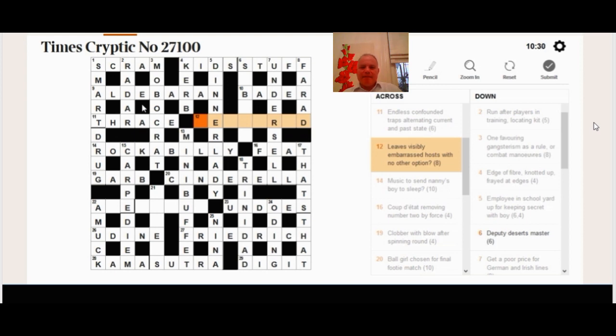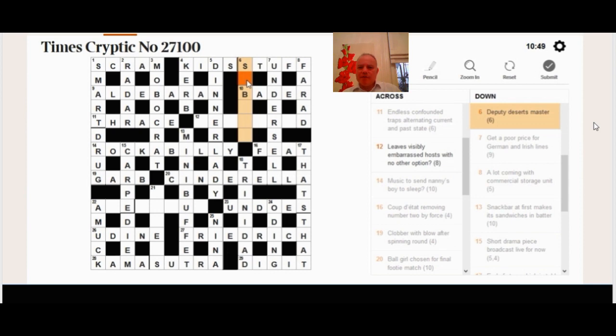So these leaves, visibly embarrassed, hosts with no other option. That turns out to be, as I said, a group of papers, so not a ream but a quire. And once you put that in, that visibly embarrassed hosts, so red goes hosts quire to make required with no other option. And this one where master as a verb was the definition. Sub is the deputy. And desserts are due. Your due or your dues are your desserts. Fantastic clue. Apart from deputy, both of those words in that clue are not the meaning that you expect when you read deputy, deserts, master.